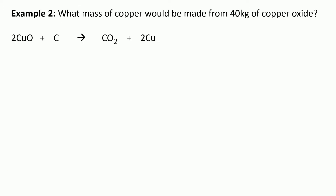Let's look at another example. This time it says what mass of copper would be made from 40 kilograms of copper oxide. We could change the kilograms into grams and then back again, but all those extra steps mean we could make a mistake. It's far easier just to cross out kilograms and imagine it's in grams, then remember at the end that the answer is in kilograms. So we do it exactly the same as before — we write down 40 grams of copper oxide under the equation and we want to know the mass of copper.